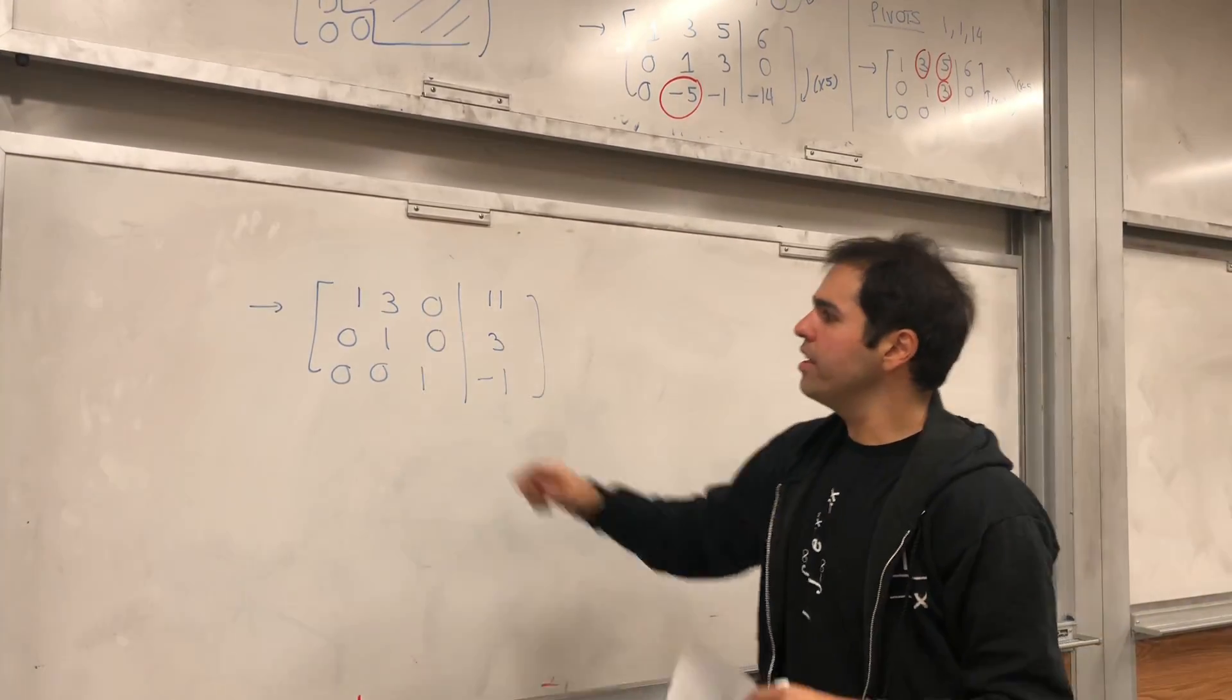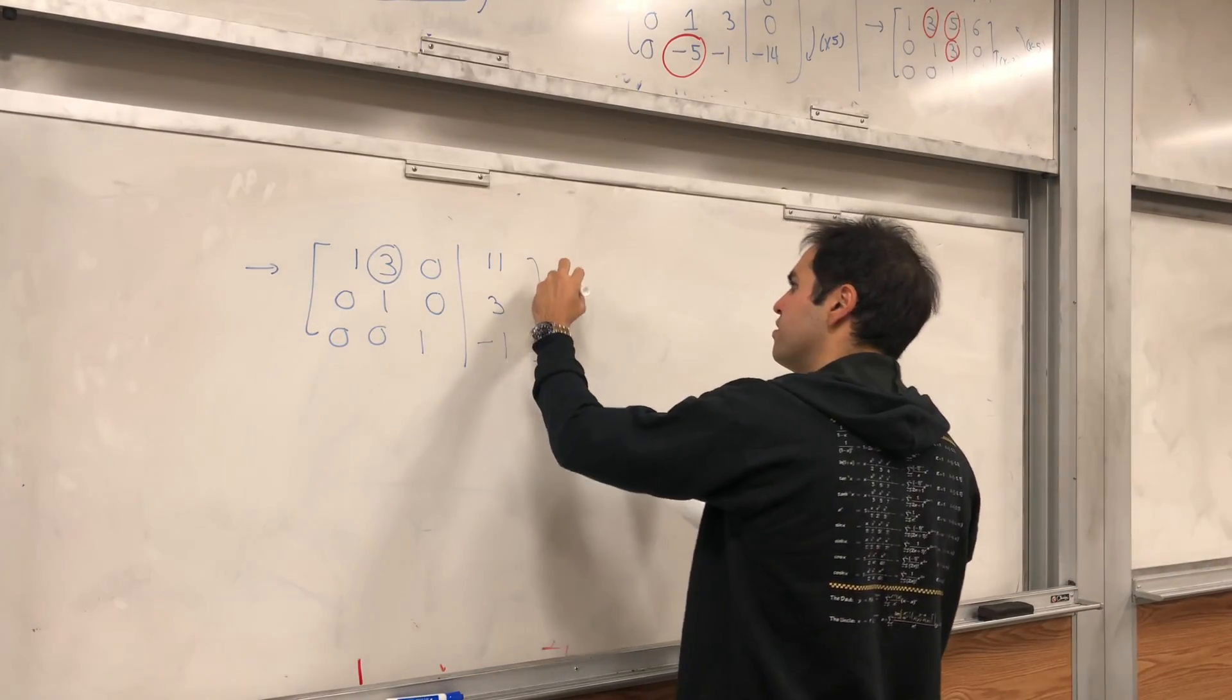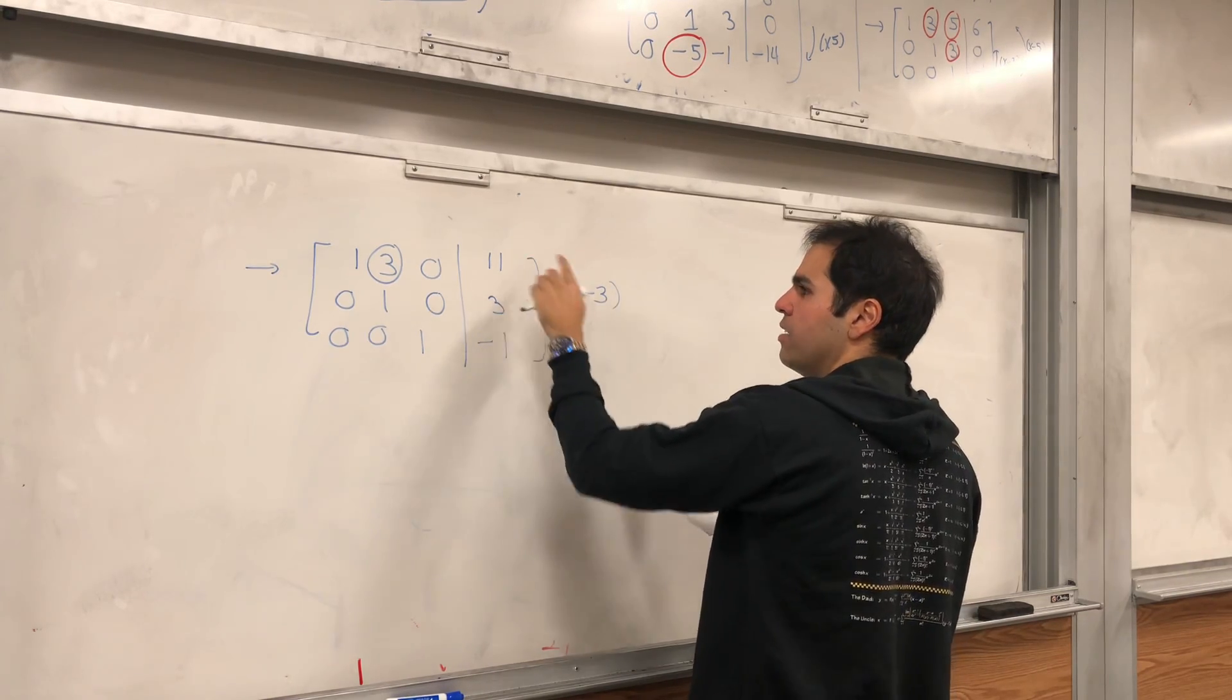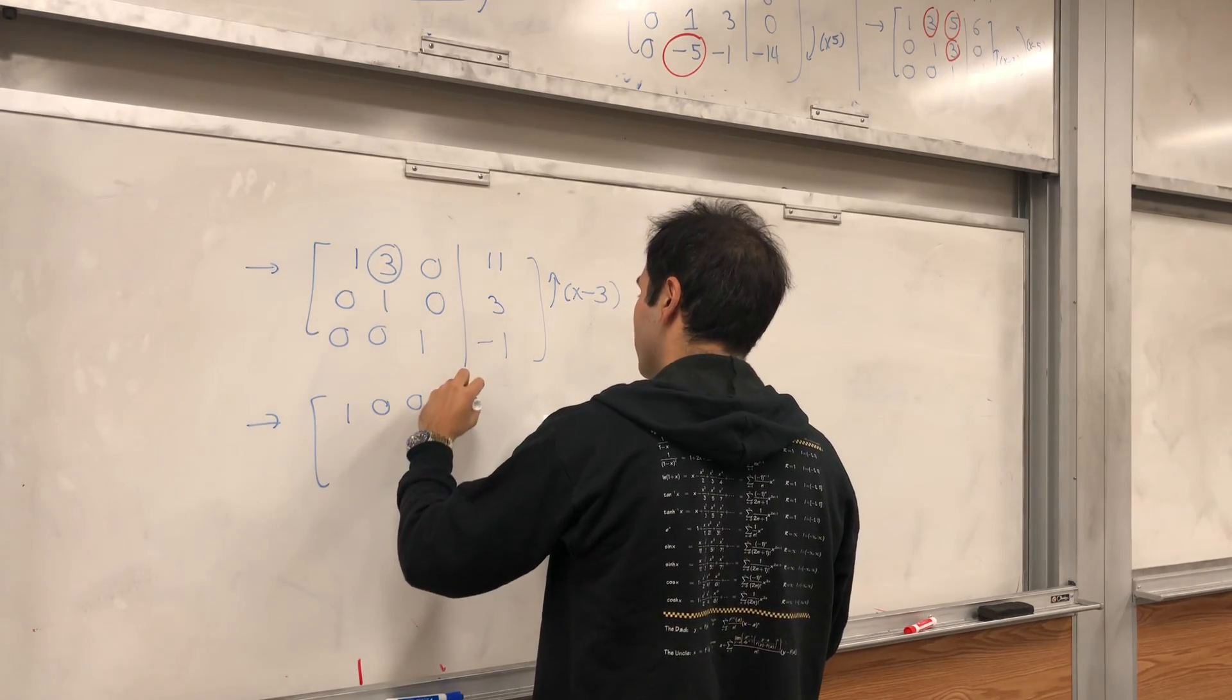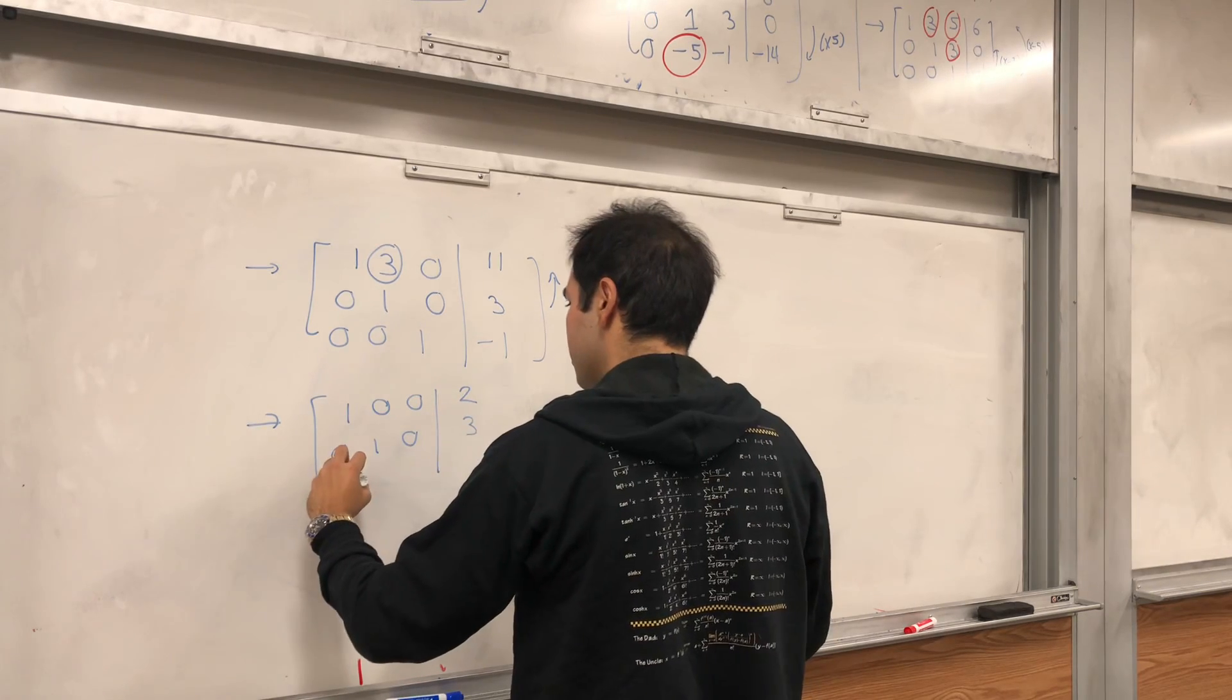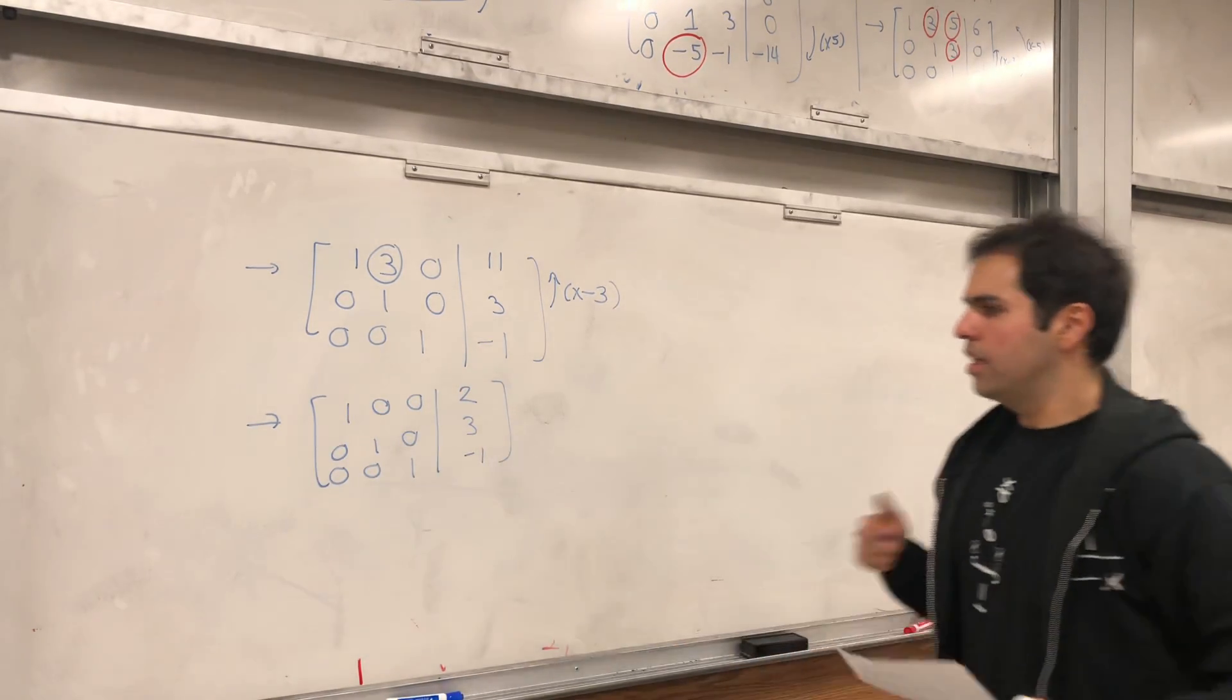The only thing we still need to eliminate is this 3. And for this, let's add minus 3 times the second row to the third row. And we get 1, 0, 0, 2. 0, 1, 0, 3. 0, 0, 1, minus 1. And lastly, the last step is what's called back substitution.